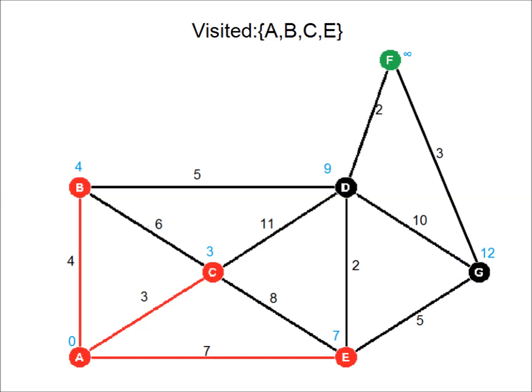At this point we have two vertices that we could visit. D has the lower tentative distance, so we visit D. From here we calculate new values for G and F, but the calculated distance is higher than G's current tentative distance, so we ignore it. For F, the current value is infinity, so we replace it with this new value, which is eleven.